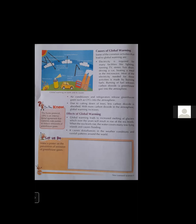The Kyoto Protocol of 1992 is an international agreement that commits state parties to reduce the emission of greenhouse gases. It is an international agreement between developed countries to reduce the emission of greenhouse gases like carbon dioxide, chlorofluorocarbon, and methane. However, we are still using materials that produce large amounts of carbon dioxide — such as burning coal in thermal power stations and using petrol and diesel in vehicles — which produce greenhouse gases.